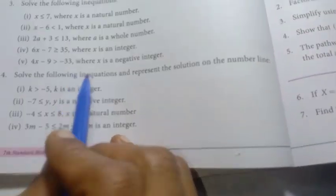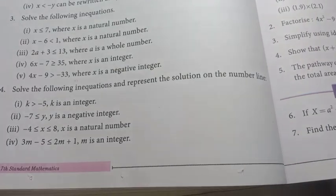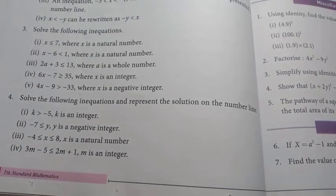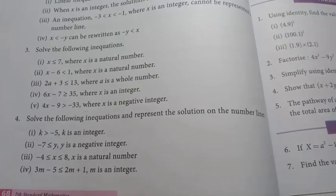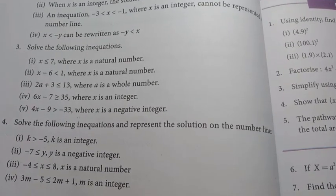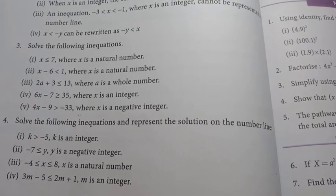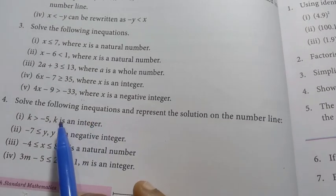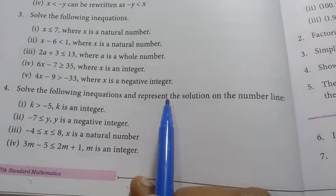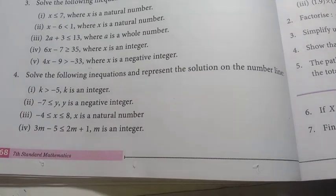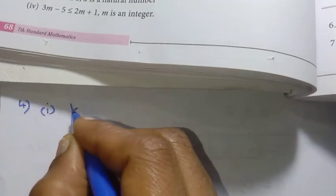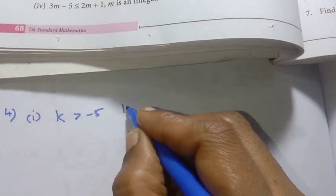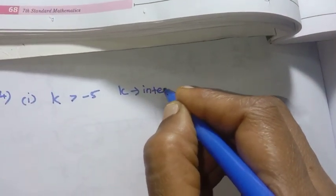Solve the following inequation and represent the solution on the number line. Already in our first video you will see the rules. If you are looking at the rules from class or from the video, it will be easy to solve. So in the first one, k is greater than minus 5, where k is an integer.